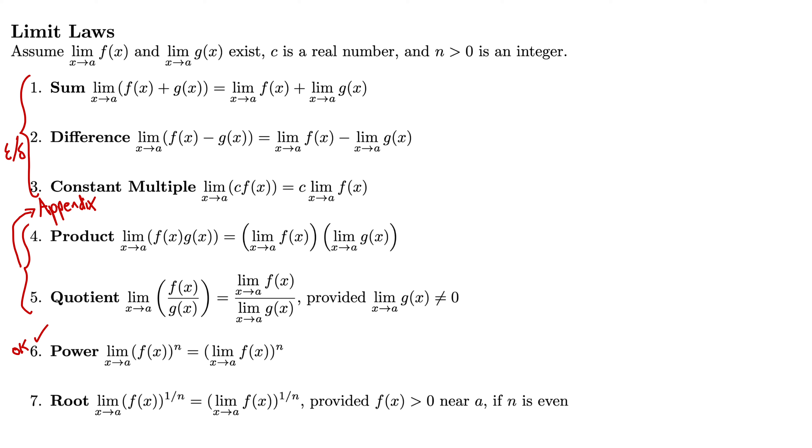The proof of number 7, the root limit law, comes from an upcoming section where we're going to talk about the limits of compositions. Notice that this is a composition of f(x) is one function and something to the power of 1 over n is another function. So we have a limit law about continuous functions and compositions and how the limit comes inside of a composition of functions. That'll all be upcoming in a future section. So we'll just say continuity for that one. So now that we've established the limit laws, let's see how they work in an example.